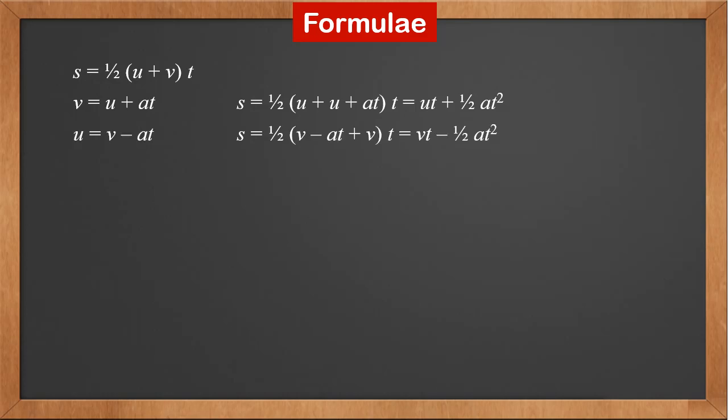From v equals u plus at, we get u equals v minus at. Substituting u into the first equation, we get s equals half (v minus at plus v) times t. So s equals vt minus half a times t squared.